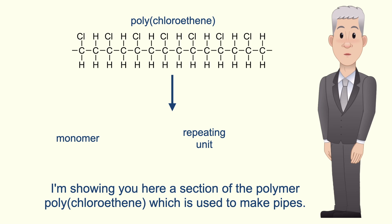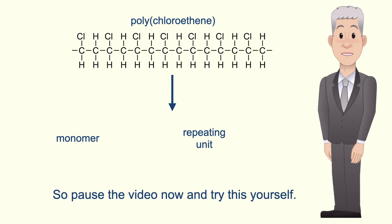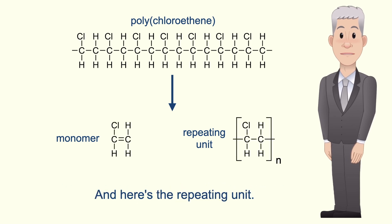Here is a section of the polymer polychloroethene, which is used to make pipes. Work out the monomer and the repeating unit — pause the video now and try this yourself. The monomer is the compound chloroethene, and here's the repeating unit.